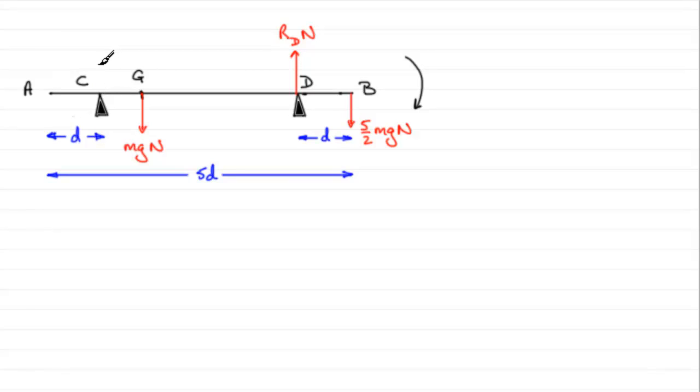Okay, so that would be my diagram, and we've got to find this length GD. We've got to show in fact that the length GD turns out to be 5 over 2 D.